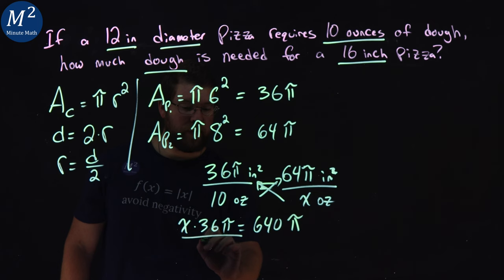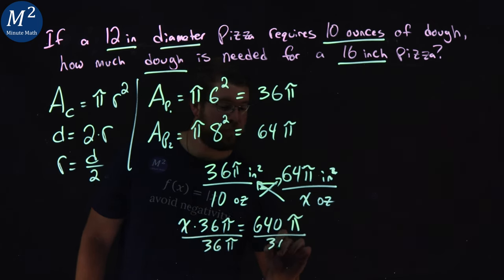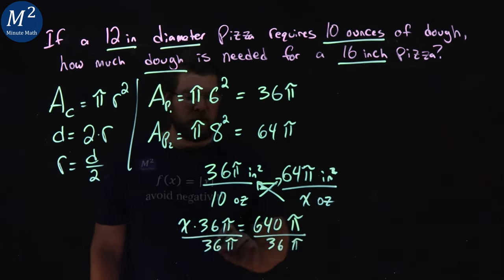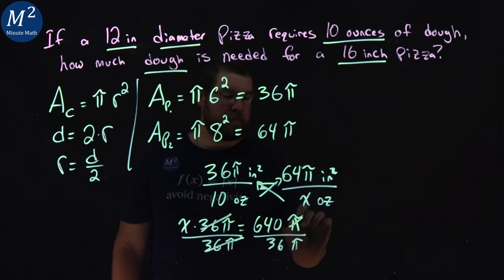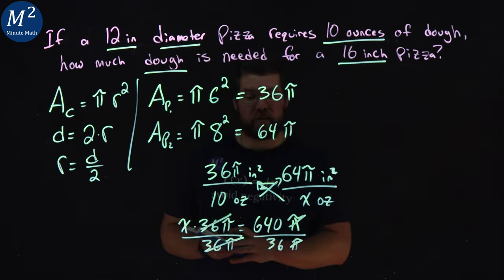Now, we're going to divide by 36 pi to both sides. Right there. That cancels here. Pies cancel. That's why I kept them in. Didn't feel like dealing with a decimal yet.